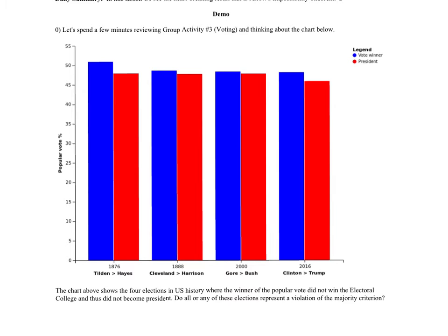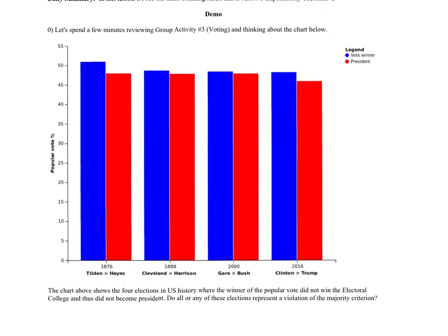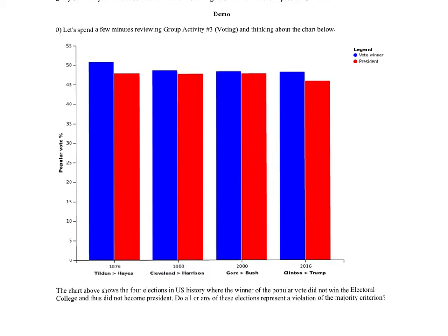Looking at 2016 Clinton vs. Trump: Clinton has a larger share of the popular vote than Trump, but Trump won the electoral college. You can see the blue bar is bigger than red, meaning more votes. But if you draw a horizontal line from the top of that blue bar, it is not over 50 percent. So Clinton did not get more than 50 percent of the vote, which means this is not a violation of the majority criterion.